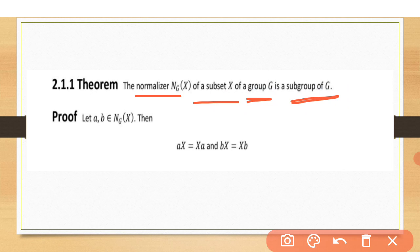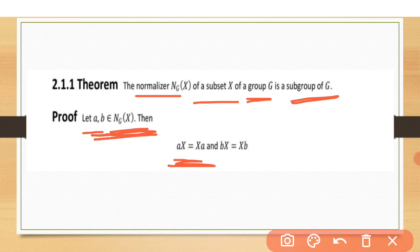This means the elements that make the normalizer of X in G also form a subgroup of G. To prove this, take two elements A and B belonging to the normalizer of X in G, meaning they permute with X: AX equals XA, and BX equals XB.